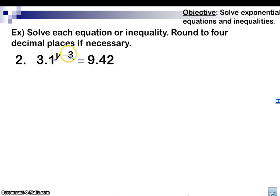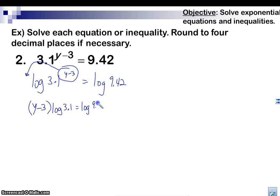All right. So, what if we have like a y minus 3, some decimals in here? Well, we're just going to do the same thing. Log 3.1 of y minus 3 equals log of 9.42. Now, what do we do? We take this entire power and we bring it to the front. So, it's y minus 3. Now, this is tricky, guys. We've got to put that in parentheses.